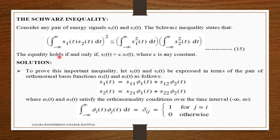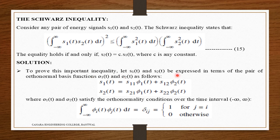The equality holds if and only if S2(t) is equal to C times S1(t), where C is any constant. To prove this important inequality, let S1(t) and S2(t) be expressed in terms of a pair of orthonormal basis functions pi_1(t) and pi_2(t) as follows.